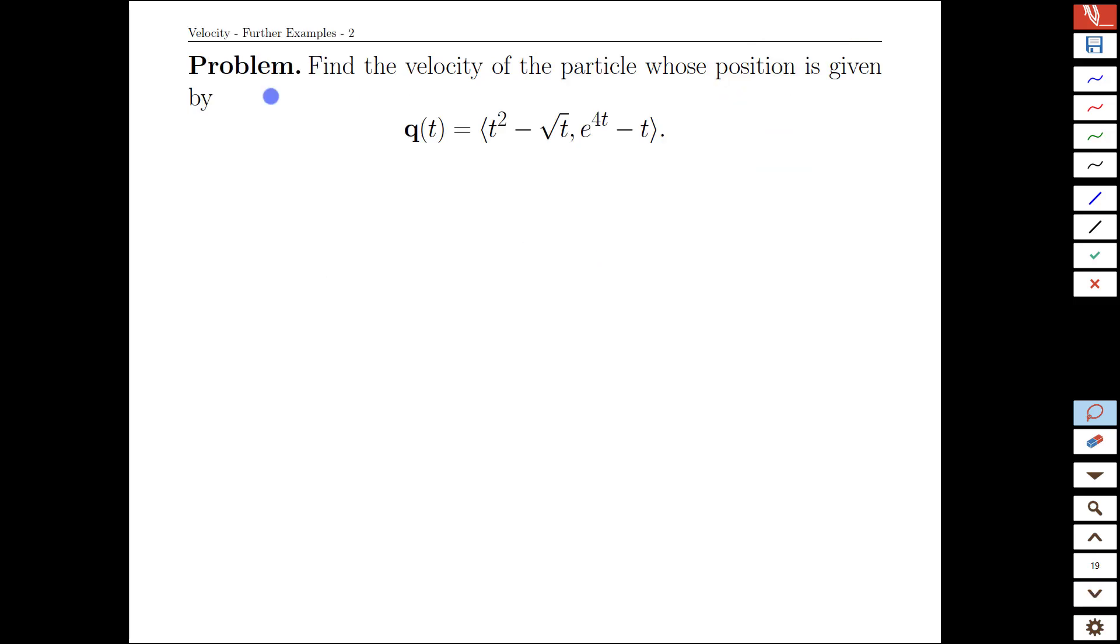Let's do some more practice. Let's find the velocity of a particle again. Position is given here to start with. It's a little more complex, but we'll just call this q prime of t, and if it's a sum we just take element by element here.